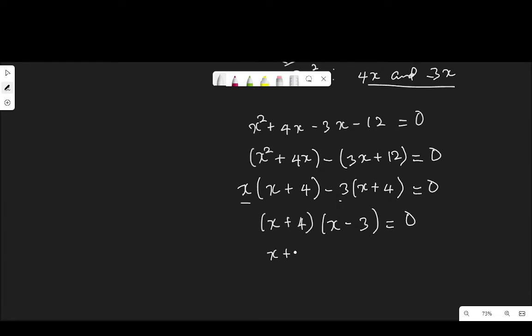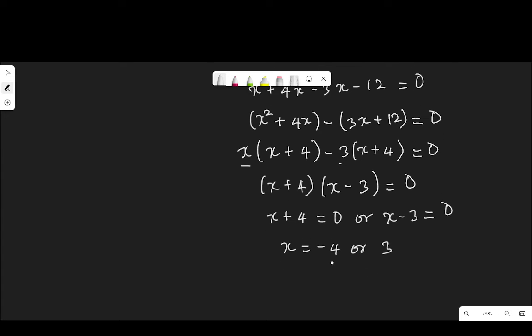That means X plus 4 is equal to 0 or X minus 3 is equal to 0. When plus 4 crosses equality become minus 4. And then when minus 3 crosses equality become plus 3. Therefore X is negative 4 or 3. And since we are talking about number base, the base of the number cannot be negative. Therefore the only answer that satisfies our requirement is 3. Hence X is equal to 3.